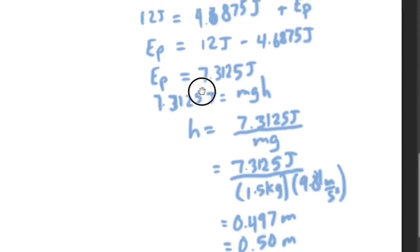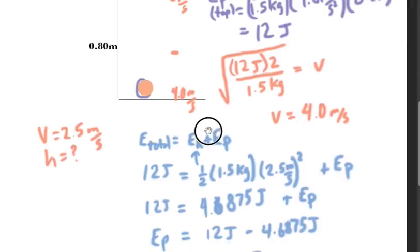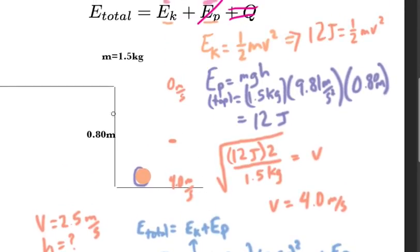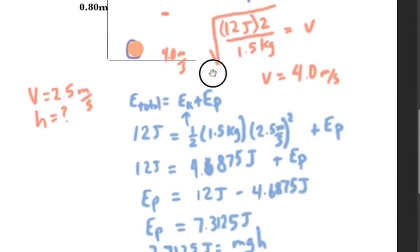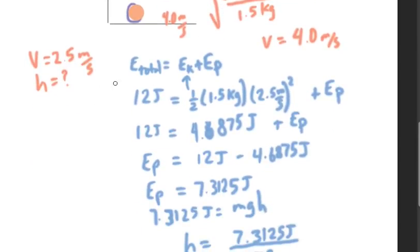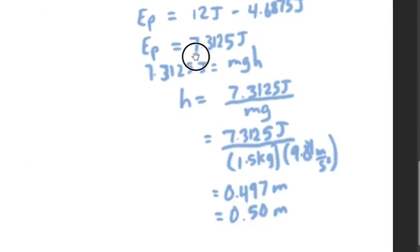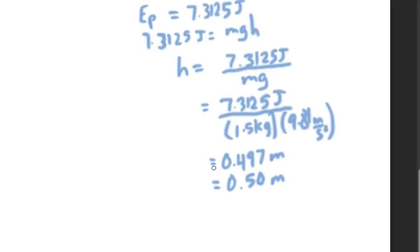So 0.497 meters, or to two digits, 0.50 meters. Now look at our original problem. We said the whole thing was 0.8 meters, and so our height was 0.5 meters. So it's actually a little bit higher than what we found here, but that's okay. This was just an estimate. And now we know that when the ball is traveling at 2.5 meters per second, it is at a height of 0.5 meters.